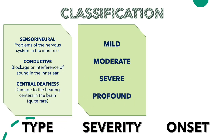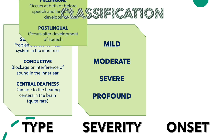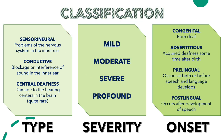When looking at severity, there's mild, moderate, severe, and profound. In terms of onset, congenital means the person was born deaf; adventitious means the person acquired deafness sometime after birth; prelingual means the hearing impairment occurred at birth or before speech and language developed; and postlingual means the hearing impairment occurred after the development of speech.